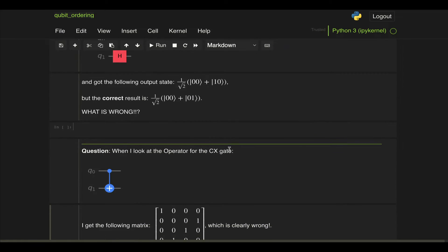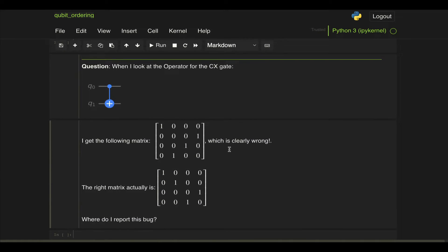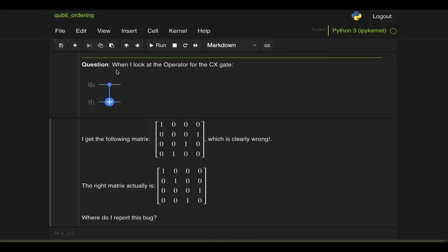Another way this question shows up is when looking at operators. So for example, when looking at the operator of the CNOT gate that has the control qubit at the top and the target qubit at the bottom, someone got this matrix and says that it's clearly wrong, and that the actual correct matrix should be this one at the bottom. As you can see, they're different, right? Here, if you look at the second column, this one shows up in the bottom row, whereas in this second matrix, that one shows up in the second row.